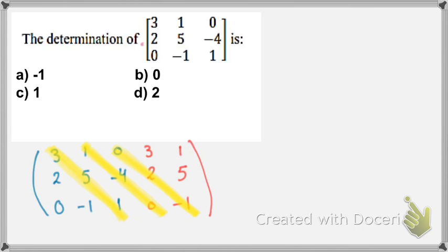3, 5, and 1 gives me 15. 1, negative 4, and 0 gives me 0. 0, 2, multiplied by negative 1 which is equal to 0. Then I go to the next three diagonals. I multiply